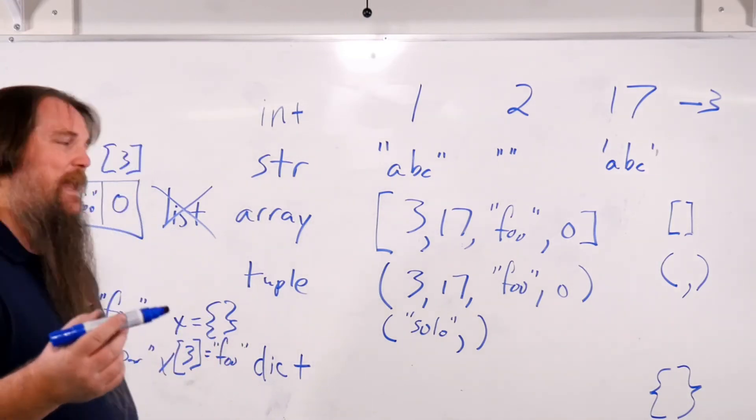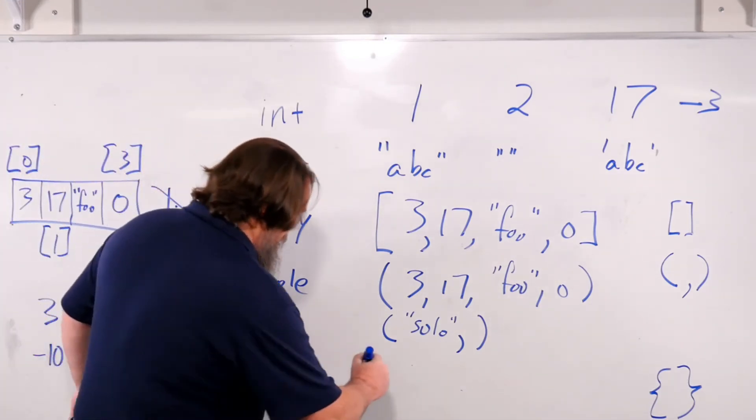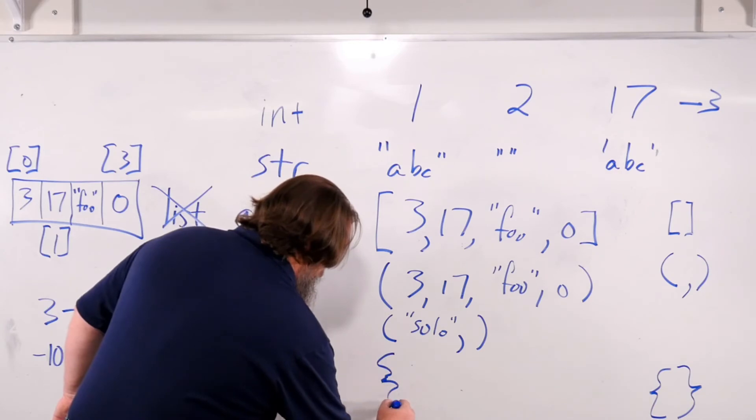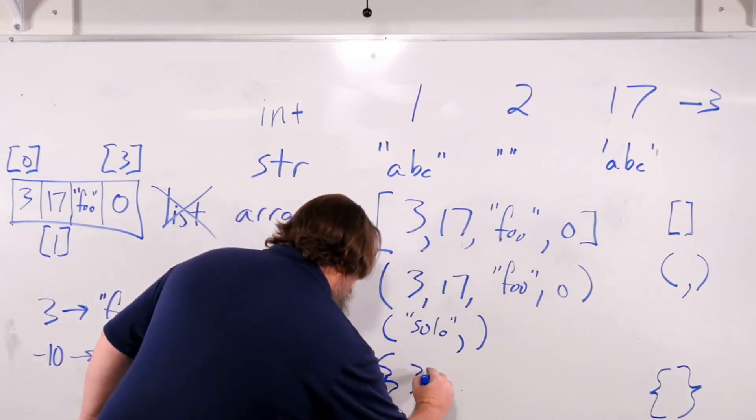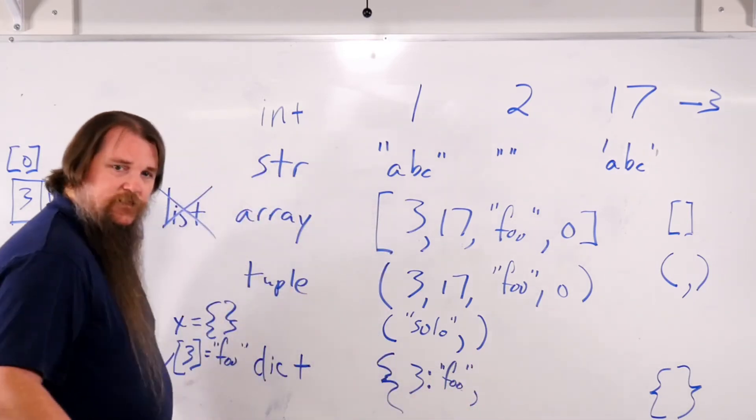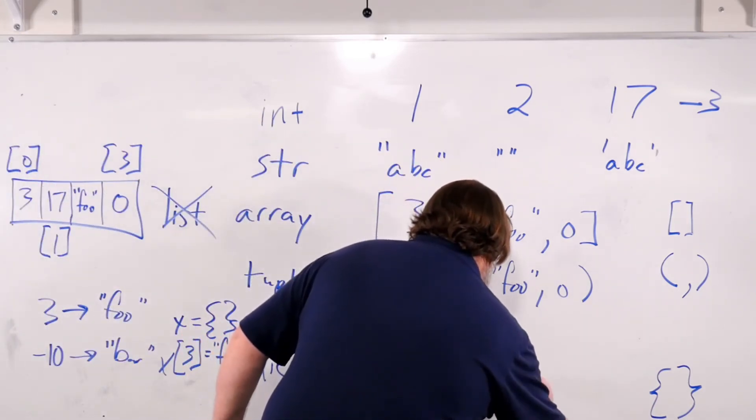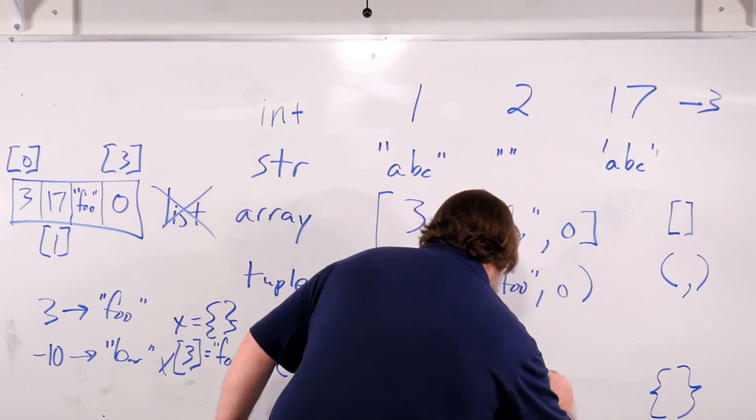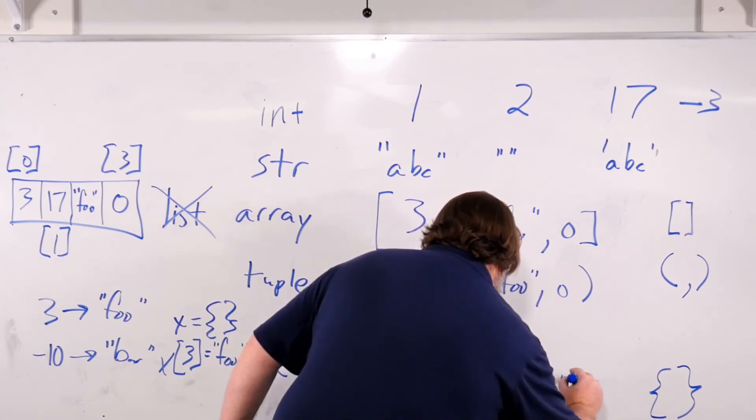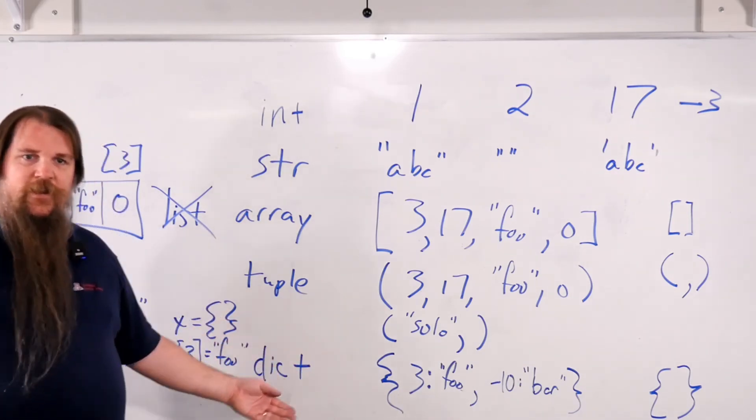The other thing you can do is that you can write a dictionary as a constant. So let's take this dictionary, three maps to foo, negative 10 maps to bar. To do that, we would do open curly brace, 3, colon, foo, comma, negative 10 maps to bar. Negative 10, colon, bar.